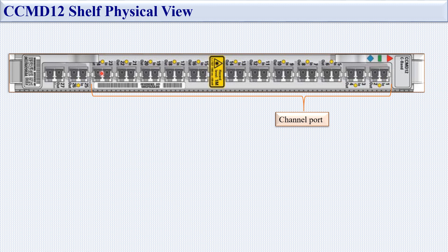Port numbers 1 to 24 are the channel ports. For channel one, port number 1 is the input and port number 2 is the output. Similarly, for channel two, port number 3 is the input and port number 4 is the output.